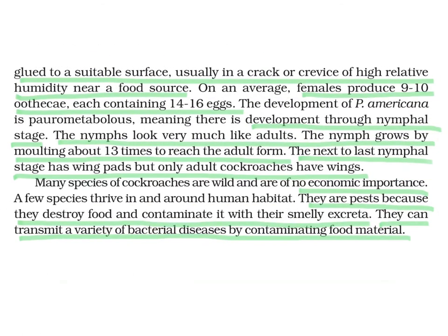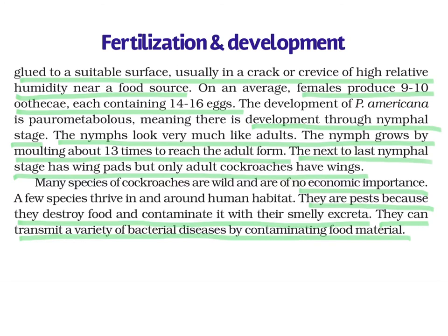Now let us discuss fertilization and development. The sperms are transferred through spermatophores, which are formed when sperms are glued by secretion of the seminal vesicle. The fertilized eggs are encased in capsules known as oothecae. Each ootheca is a dark reddish to blackish-brown capsule, about 3 to 8 mm long. They are dropped or glued to a suitable surface, usually in cracks or crevices of high relative humidity near a food source.